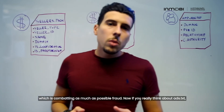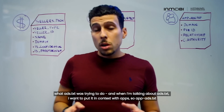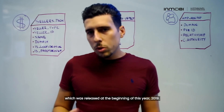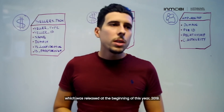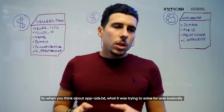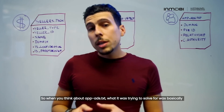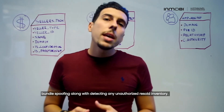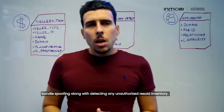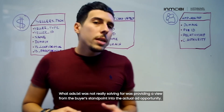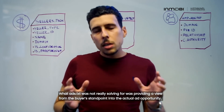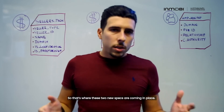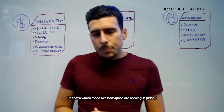If you think about ads.txt — and I want to put it in context with apps, so app-ads.txt, which was released at the beginning of 2019 — what app-ads.txt was trying to solve for was basically bundle spoofing, along with detecting any unauthorized inventory. What ads.txt was not really solving for was providing a view from a buyer standpoint into the actual ad opportunity. That's where these two new specs are coming into place.